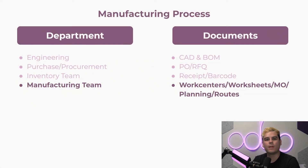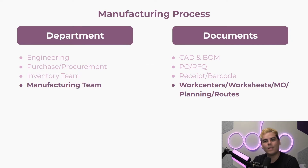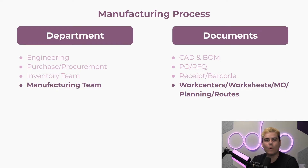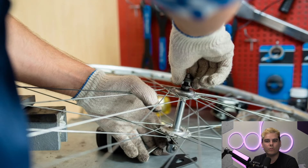Next, responsibility shifts from inventory to the manufacturing team. Now that materials have been secured for production, we can move on. The manufacturing team is responsible for actually producing goods, which typically occurs in-house on production floors inside a work center. In some cases, manufacturing happens by means of subcontractors, which usually takes place outside the facility.